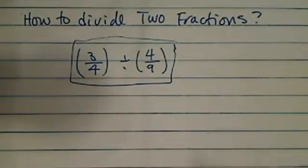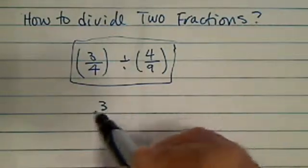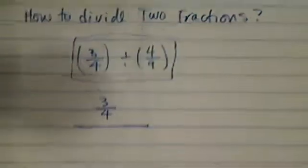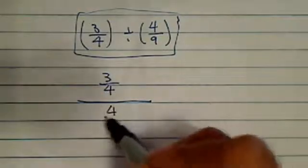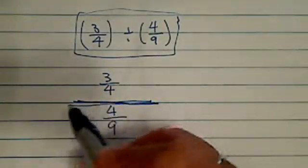So one thing you can do is you write it into the fraction form. 3 over 4, and then what we call this compound fraction, or someone else calls it a stacked fraction.